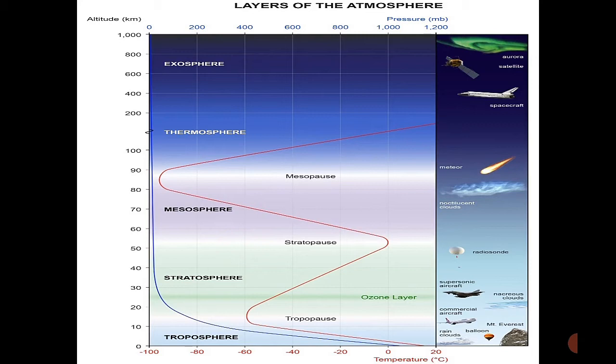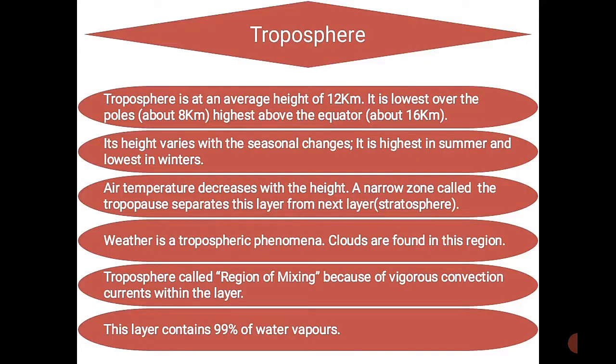First, the troposphere. The troposphere is at an average height of 12 kilometers. It is lowest over the poles at about 8 kilometers and highest above the equator at about 16 kilometers. Its height varies with seasonal changes — highest in summer and lowest in winters. Air temperature decreases with height in this zone, going from about 15 to minus 56 degrees Celsius.